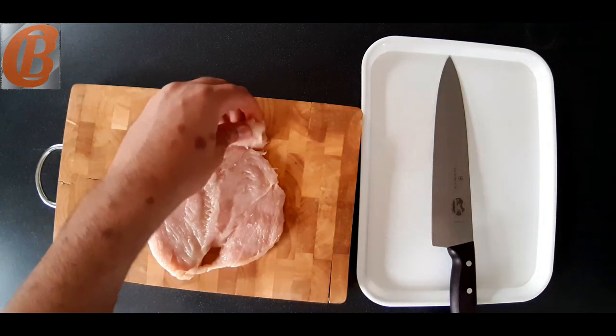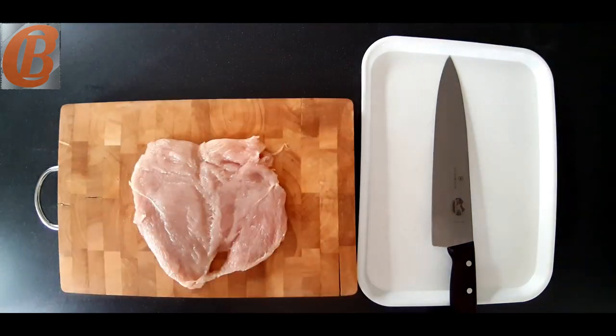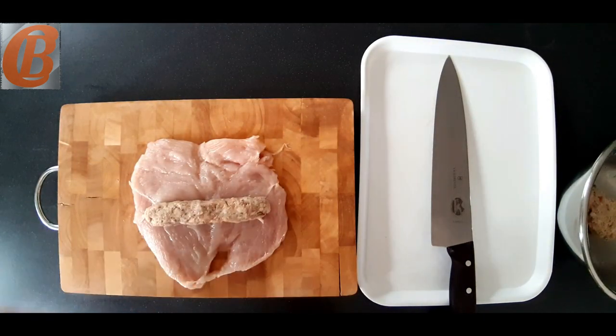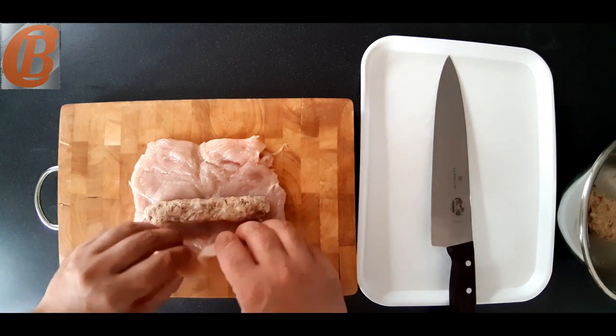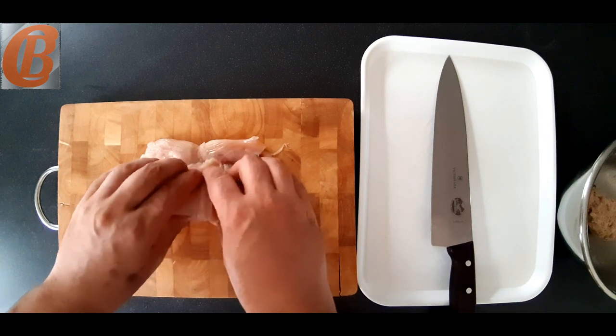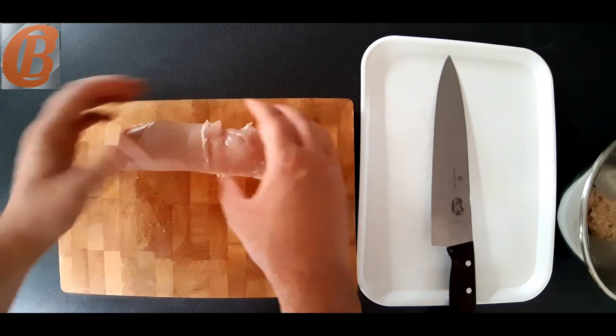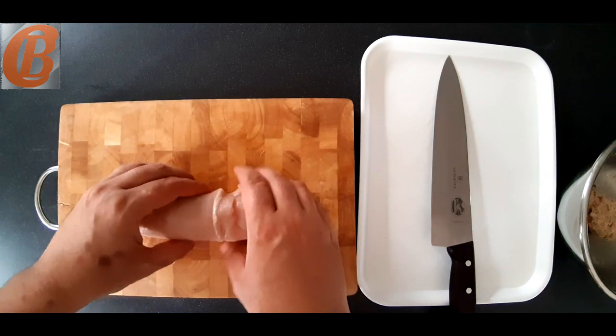But if you do, it's not the end of the world. It shouldn't affect the end product too much as long as the holes aren't too big. So put your chicken back on your cutting board and we're about ready to stuff it now. So go and grab your stuffing out of the fridge and roll a piece into a cylinder about a centimeter in diameter and just a bit shorter than the width of your chicken breast and place it in the middle. Now roll it up from the thin edge at the bottom all the way to the thicker edge at the top, making sure at all times you're keeping it tight as possible to keep a good shape when it's finished.